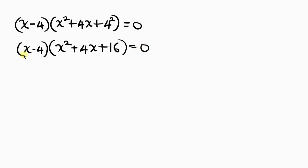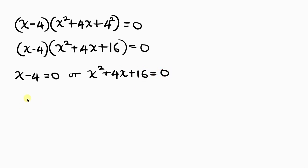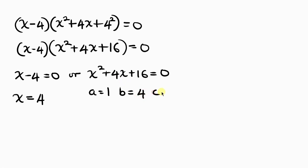So there are two cases here. The first case is x minus 4 equal to 0, or the second case is x squared plus 4x plus 16 equal to 0. For the first case, moving negative 4 to the right hand side, x becomes positive 4. For the second case, we have a quadratic equation, so we're going to use the quadratic formula to solve it since we cannot factorize. Here, a is 1, b is 4, and c is 16.